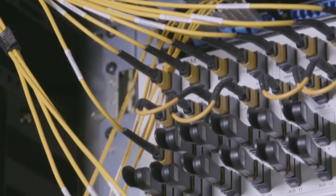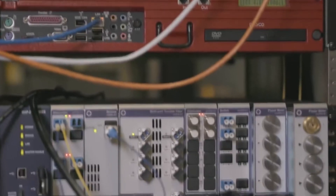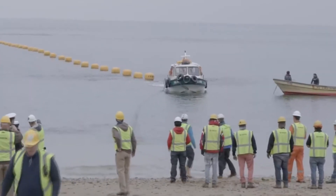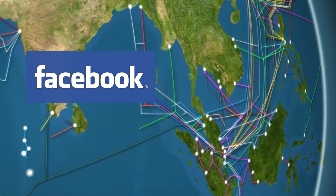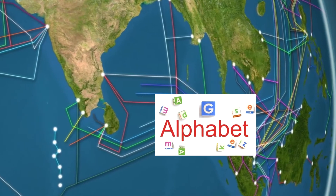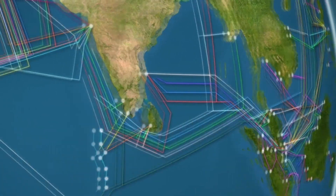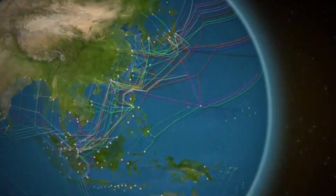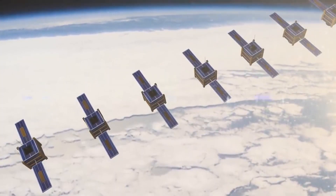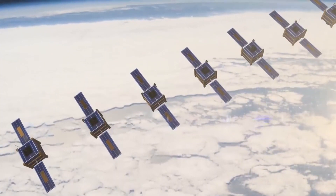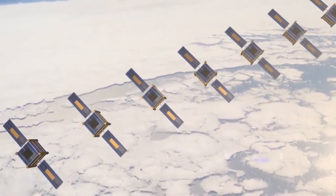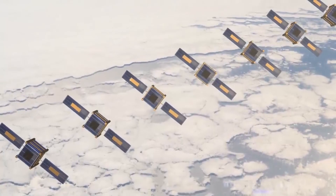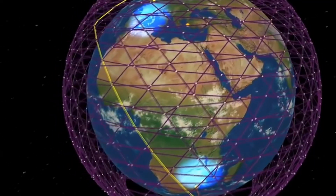With the rise in internet subscribers, the need for fast connections, high bandwidth capacity, and low latency has driven large companies such as Facebook, Microsoft, Amazon, Alphabet, and Apple to build new undersea cables. Meanwhile, satellite data traffic also receives special attention, as it allows remote areas such as forests, mountains, and small islands not covered by cables to connect to the global internet network.